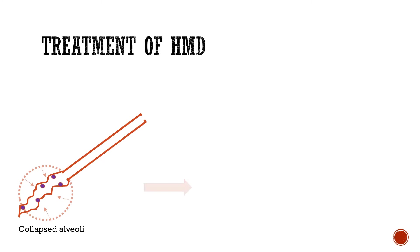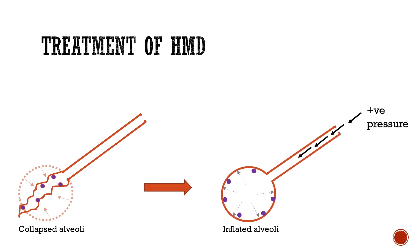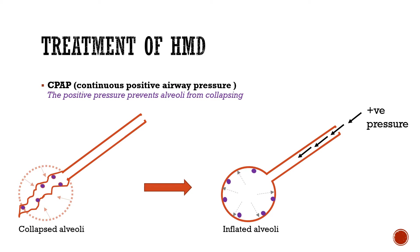Now let's see the treatment of HMD. Treatment begins with preventing the collapsing of the alveoli and opening already closed alveoli. This is done by giving positive air pressure. By giving a positive pressure to the alveoli, it can be reopened. This positive pressure is provided by a device called CPAP, which continuously provides positive pressure to keep the alveoli patent.